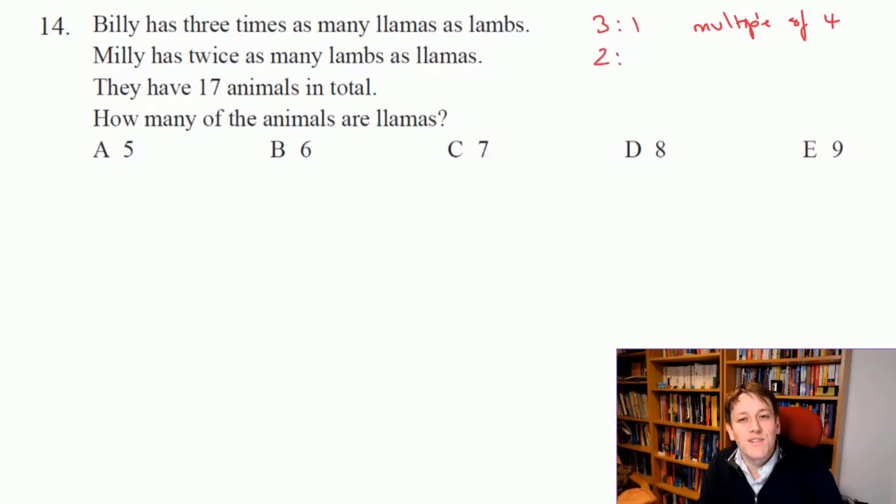So for her it must be a multiple of three, because she's got twice as many lambs as llamas. For every llama she's got two lambs, so they come in little groups of three.